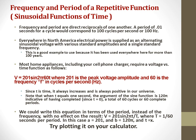So we could write it as V = 201 sin(2πT/τ), where τ is a constant, τ = 1/60 seconds per period. In this case, a = 201, b = 120π, and T = x. Try plotting it on your calculator.